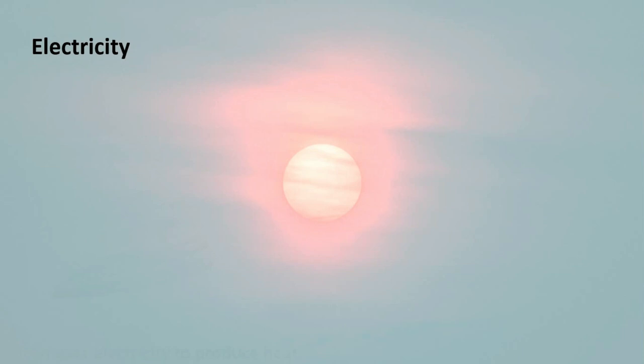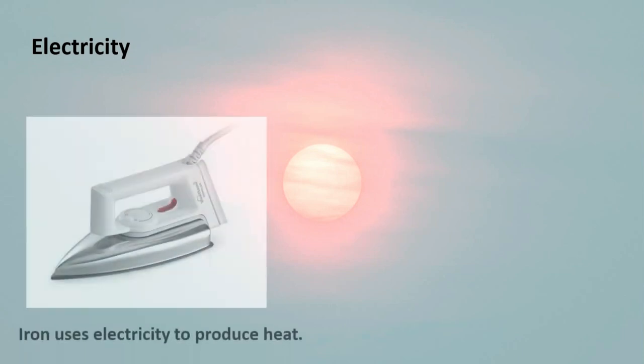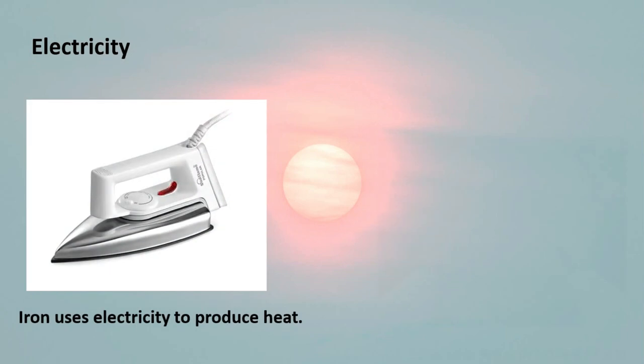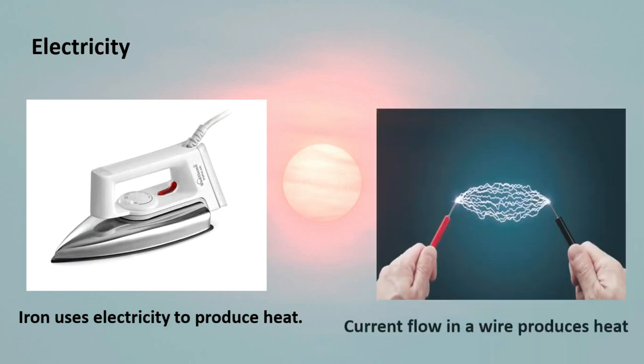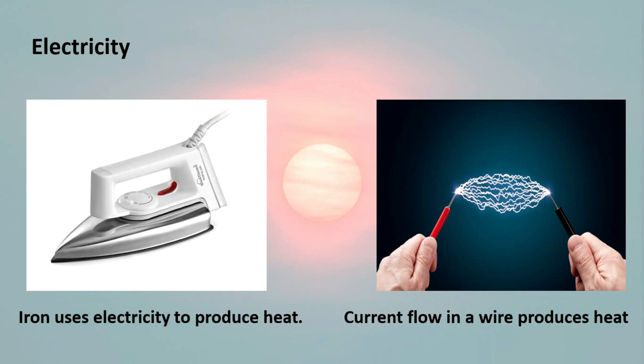Similarly electricity hain, bijli ke zariye bhi hum heat energy produce kar sakte hain. Jis tarah hamare gharon mein iron use hoti hai, to iron uses electricity actually. Wahan par jo heat banta hai to woh bijli ki wajah se banta hai. Us ke andar ek resistor laga hota hai to woh current ko resist karta hai aur resistance ke zariye se electrons aapas mein rub ho jate hain, friction karte hain ek doosre ke sath, wahan par heat banta hai. Similarly current flow in a wire produces heat. Jab ek wire mein current flow karta hai to woh wire bhi garam ho jata hai due to the resistance of electrons.